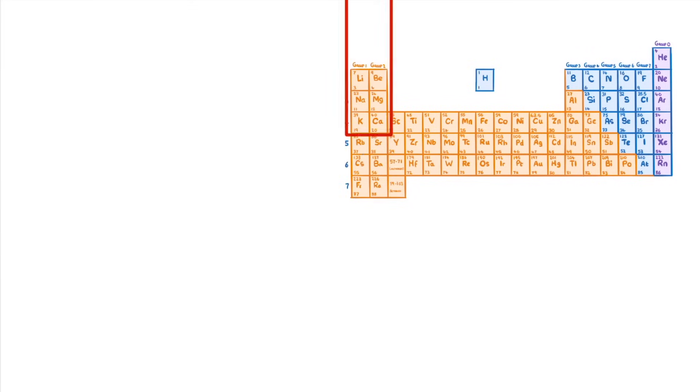If an element is found on the left of the periodic table, then it won't have many electrons in its outermost shell. For example, calcium in group 2 has 2 electrons in its outer shell. This makes it easy to lose these outer electrons and form a positive ion.